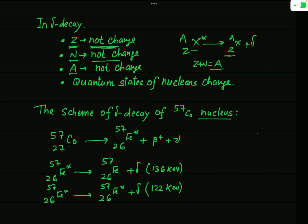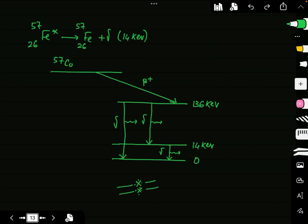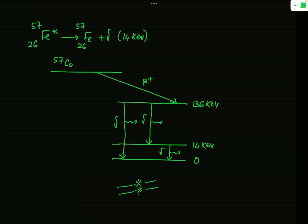We will now explain the scheme of gamma decay with a proper example. The example taken is the nucleus Co-57. The parent nucleus Co-57 is in its ground state.